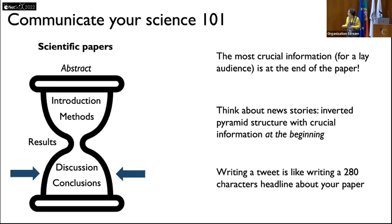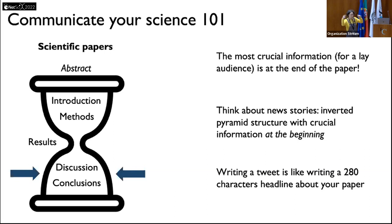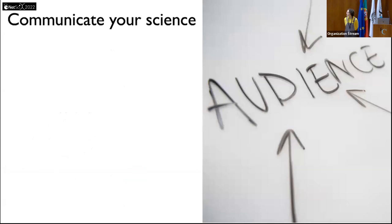This inverted pyramid is one possible structure among many for structuring your message. Thinking about Twitter: if you're writing about a paper you just published, or a project you were awarded, or a blog post — you have 280 characters. It's like writing a headline, or that first very short paragraph in news stories — the lead — which just answers the five W's. So it's like writing a very short lead about your paper in 280 characters. You just have to practice summarizing your ideas.